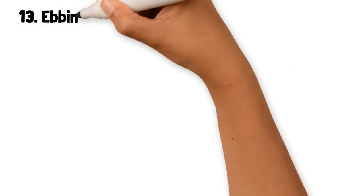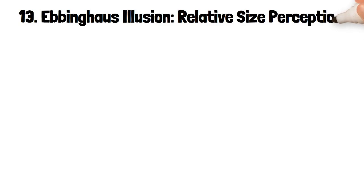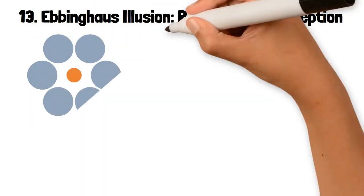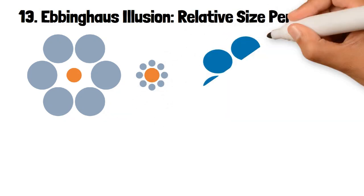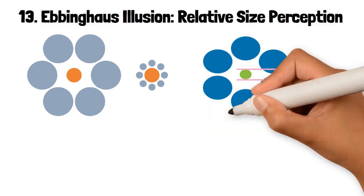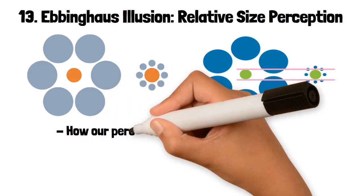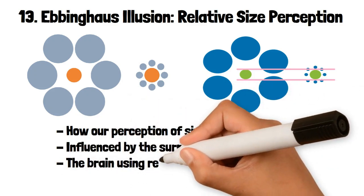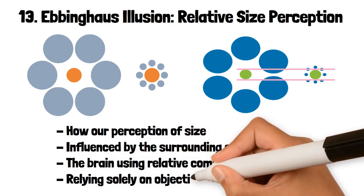13. Ebbinghaus Illusion: Relative Size Perception. The Ebbinghaus illusion involves two identical circles surrounded by other circles of different sizes. The central circle surrounded by smaller circles appears larger than the central circle surrounded by larger circles, even though they are the same size. This illusion demonstrates how our perception of size can be influenced by the surrounding context, with the brain using relative comparison to judge size rather than relying solely on objective measurements.